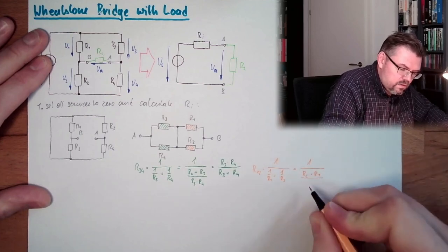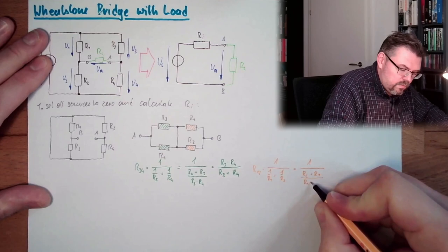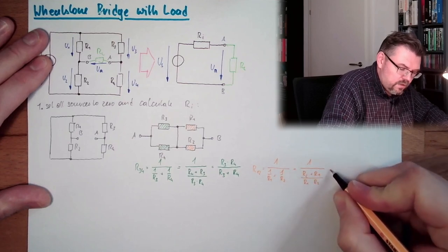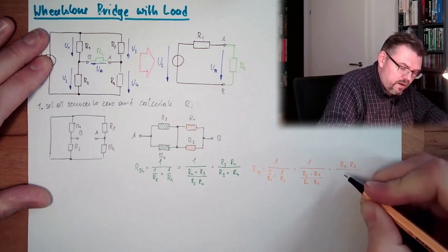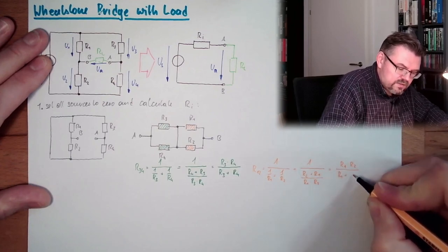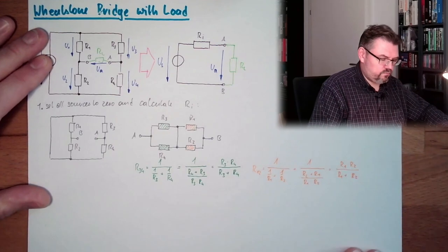And now, R1 plus R2, R1 plus R2 divided by R1 multiplied by R2 divided by R1 plus R2.